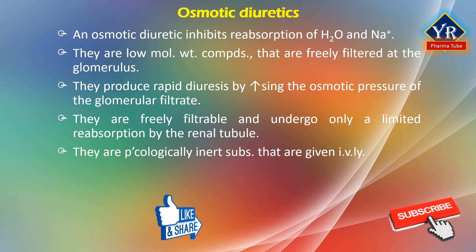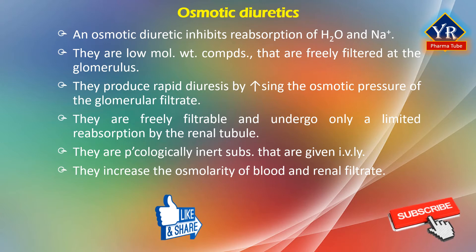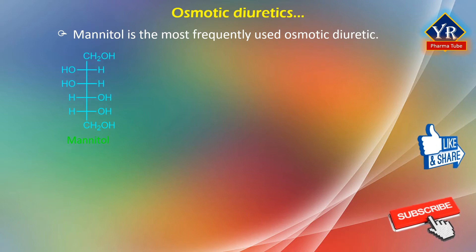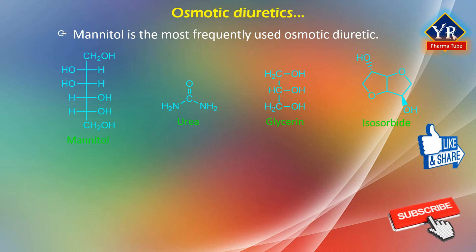They are relatively pharmacologically inert substances that are given intravenously. They increase the osmolality of blood and renal filtrate. Mannitol is the most frequently used drug of the osmotic diuretics. The other agents include urea, glycerin, and isosorbide. Glycerin and isosorbide are used orally for short-term reduction of intraocular pressure in acute glaucoma or prior to surgery.